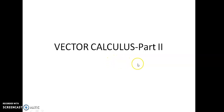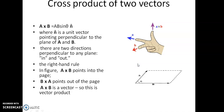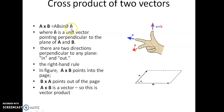Now we see the next part of vector calculus. In the last class we have seen the scalar product of two vectors. Now here we will see the cross product of two vectors. The cross product of two vectors A and B is given by A cross B = AB sin θ n-cap, where AB sin θ is the magnitude of the cross product and n-cap is the direction of the cross product. n-cap is perpendicular to the plane of A and B.